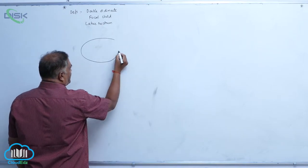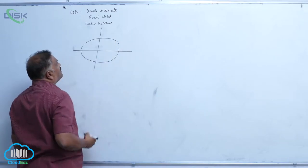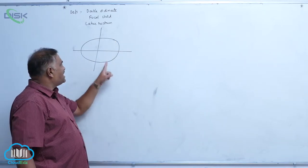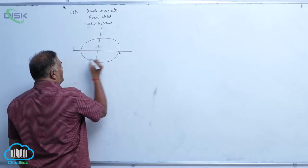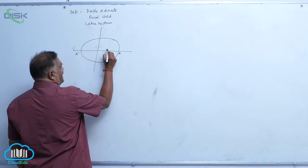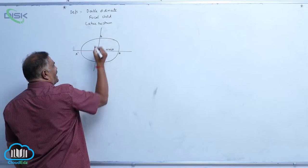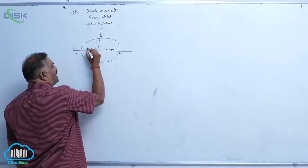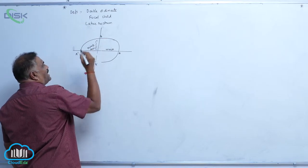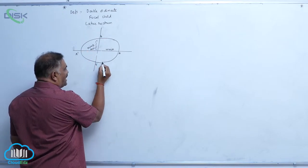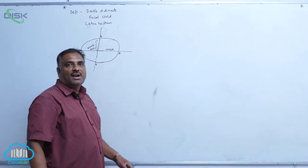If you take an ellipse equation like this, any chord which is perpendicular to the major axis — AA' is called the major axis because it is greater in length, while BB' is called the minor axis because it is less in length. So in the standard ellipse, AA' is the major axis and BB' is the minor axis.